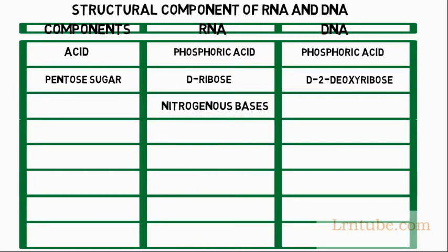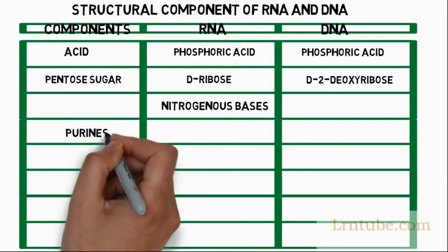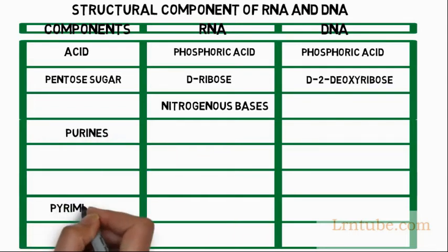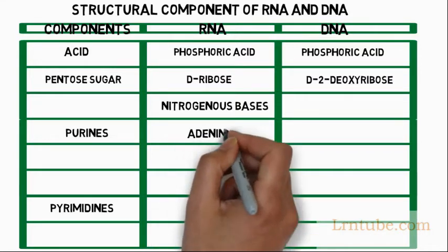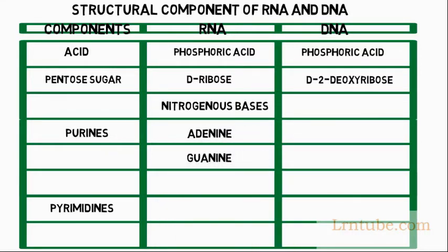Nitrogenous bases. There are two types of nitrogenous bases: purines and pyrimidines. Purines under RNA will yield adenine and guanine, and under DNA will also yield adenine and guanine.